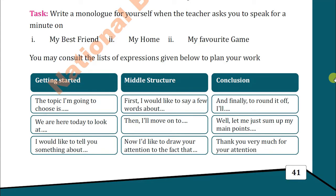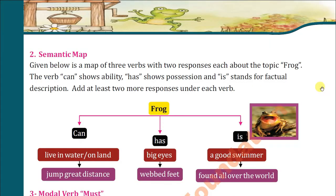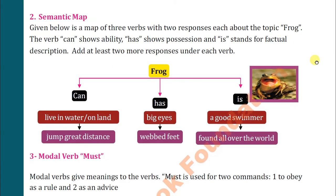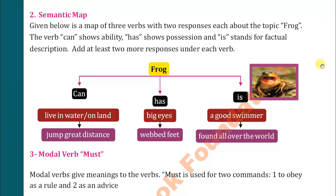Now let's come to page 42. There is a semantic map given here. Below is a map of three verbs with two responses each about the topic 'frog.' The verb 'can' shows ability, 'has' shows possession, and 'is' stands for factual description. Add at least two more responses under each verb. This is a practice of making sentences.